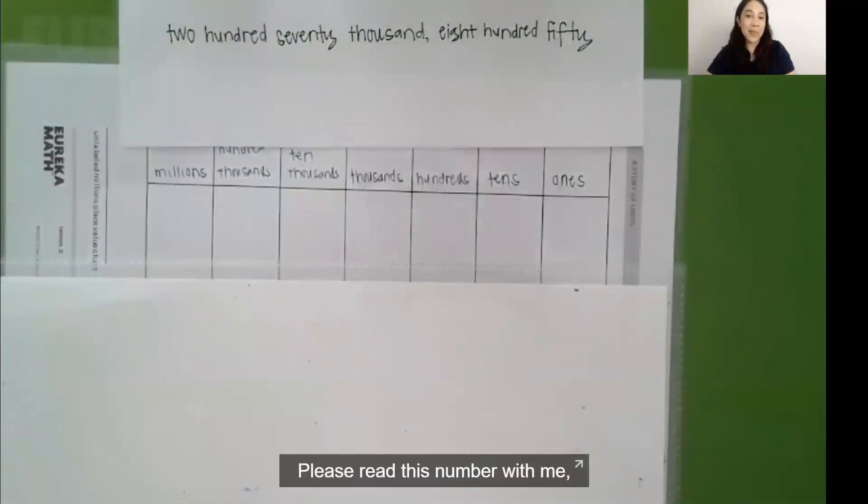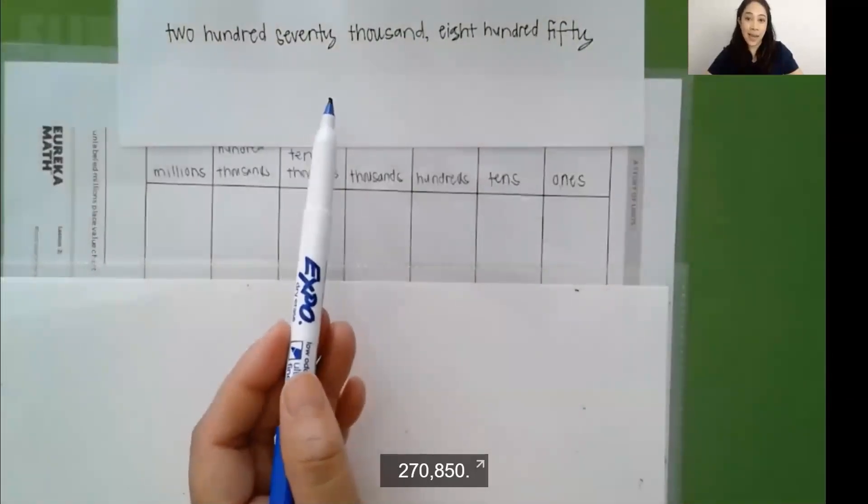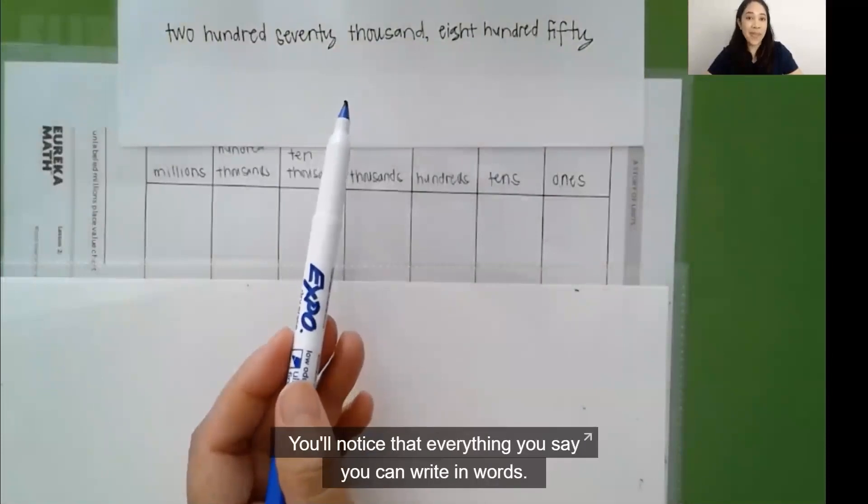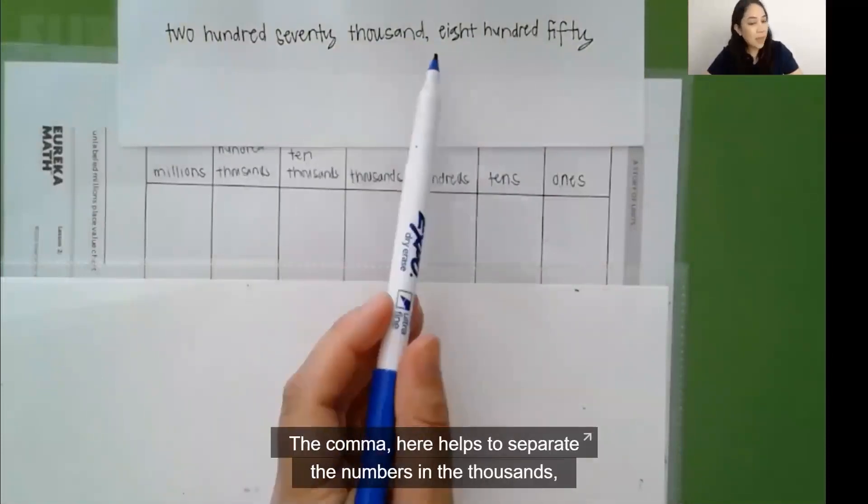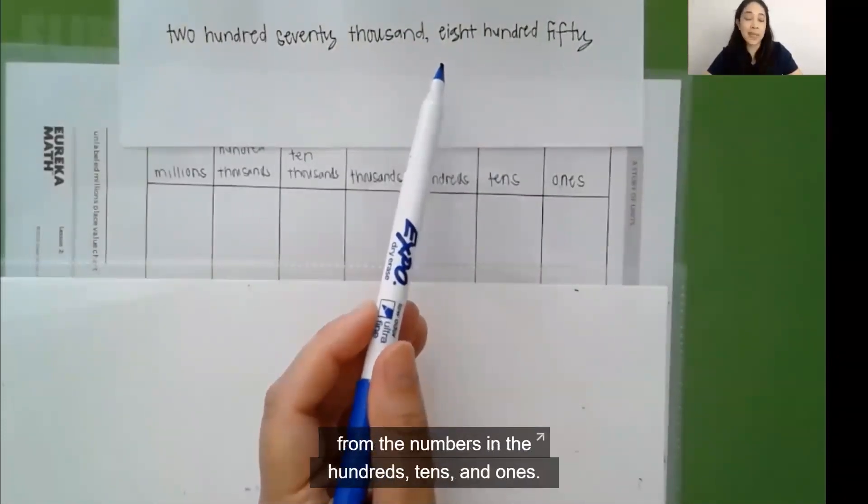Please read this number with me, 270,850. You'll notice that everything you say you can write in words. The comma here helps to separate the numbers in the thousands from the numbers in the hundreds, tens, and ones.